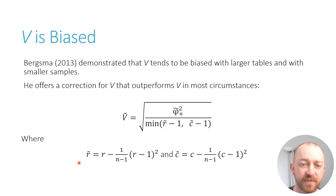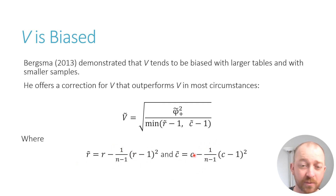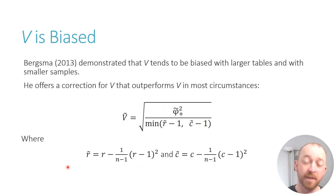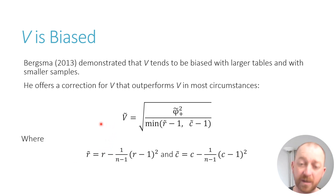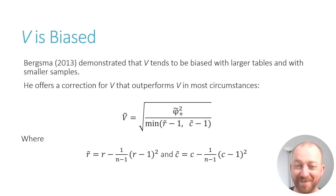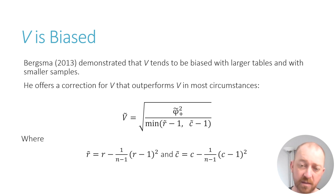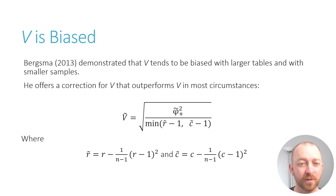What you need to do is figure out R-tilde using its equation and then figure out C-tilde using its equation, then you can plug those in and figure out everything else. The R stands for the number of rows and the C stands for the number of columns — the squiggle is important. That's a very good correction and it's usually superior to Cramér's V, at least according to Bergsma. Now I'm going to walk you through a much simpler, mathematically equivalent equation.